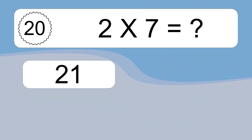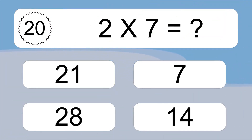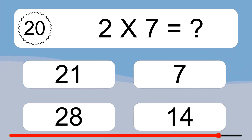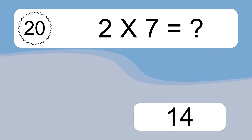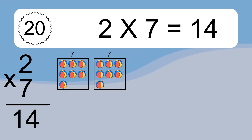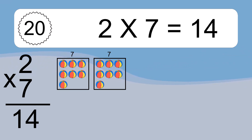2 times 7 equals what? 2 times 7 equals 14. We have 2 boxes, and each box has 7 colorful balls inside. If you count all the balls in all the boxes together, you will have 2 times 7 balls. This equals 14 balls.